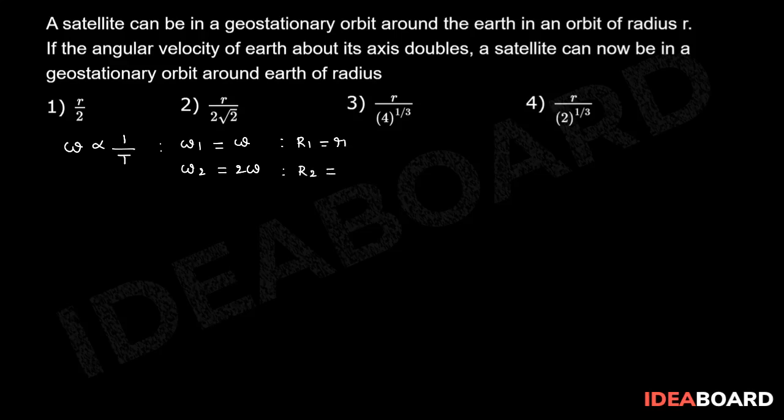r2 equals R. From Kepler's third law, T squared is proportional to r cubed. So we can write omega is inversely proportional to the square root of r cubed.